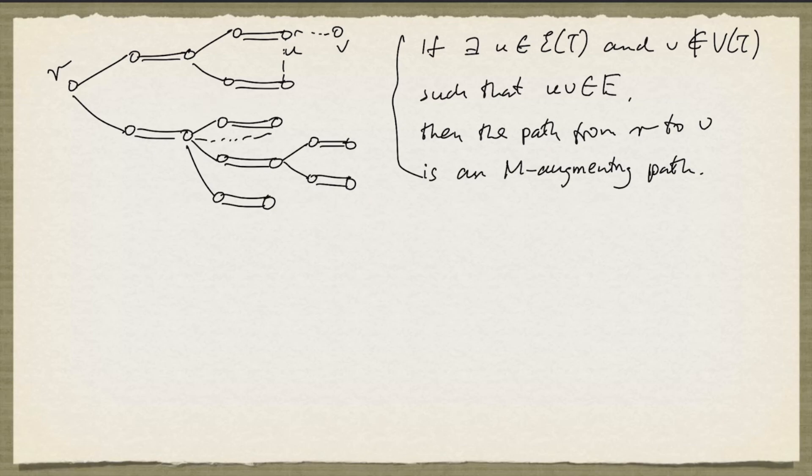And that basically is how you solve the perfect matching problem in bipartite graphs. You build the M-alternating tree, see if there's any M-augmenting path by looking for this. And if not, your tree is frustrated, and you can conclude that there's no perfect matching.